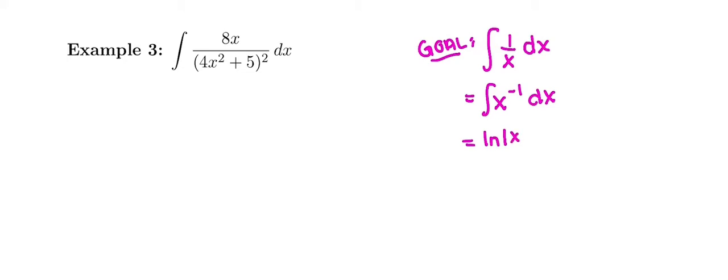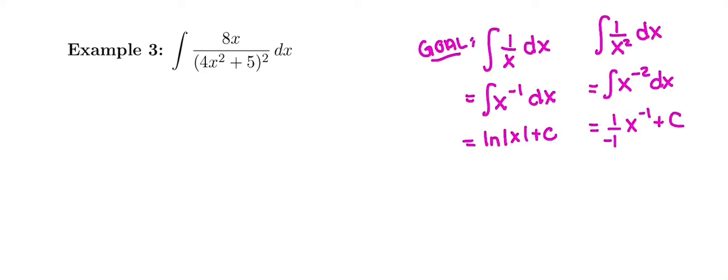Or it could be 1 over x to any other power. If it's 1 over x², we would say that's the same as x to the negative 2 dx. We would add 1 and get 1 over negative 1, x to the negative 1 plus c. So no matter what, if something's in the denominator, it's to a negative exponent. Even if it was just 1 over x.